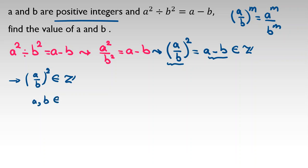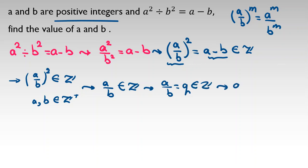We know a and b are positive integers, so a over b is a rational number. The only case where a over b squared is an integer is when a over b is itself an integer. So let a over b equal q, where q is an integer, meaning a equals b times q.